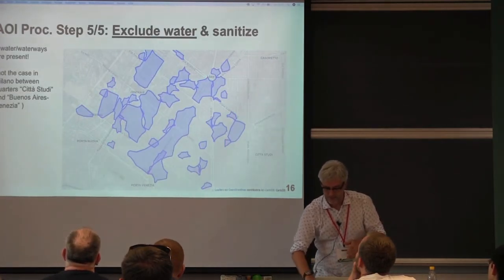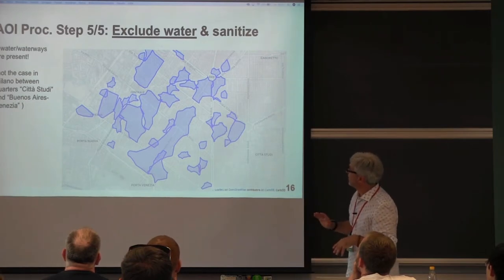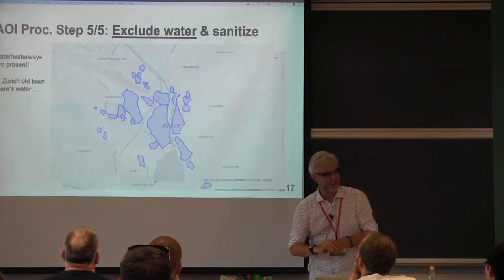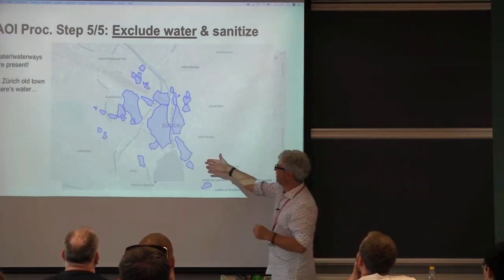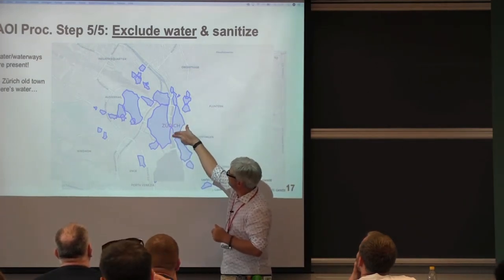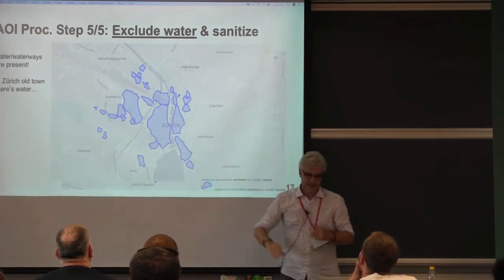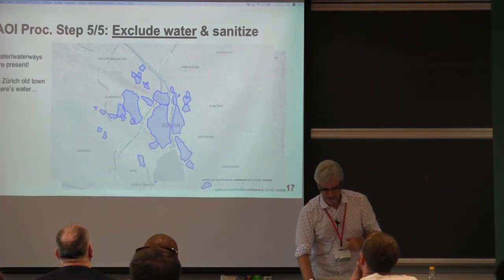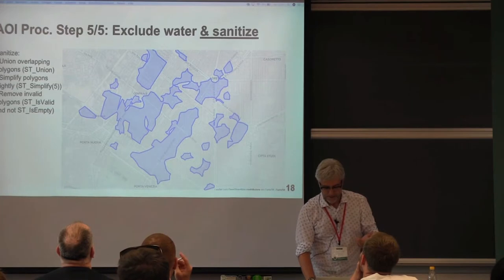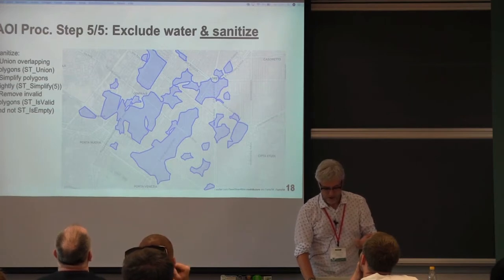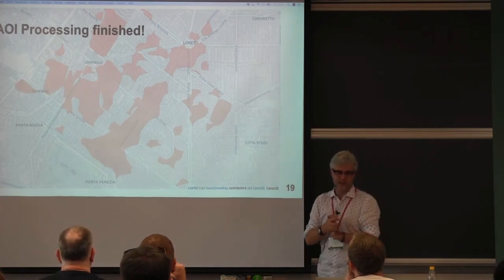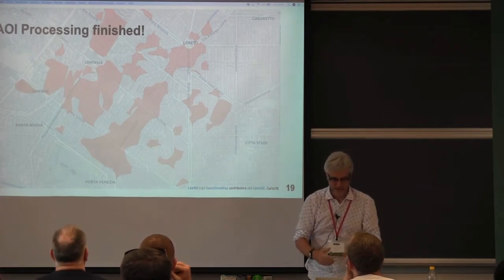Finally, we exclude water areas — there are none in Milan, so I show the example of Zurich where there is a lake and a river. Those water areas are excluded and the whole result is sanitized, which then looks like this for Milan. The result visualized in orange looks like this — that's the result. There's a homepage showing this which I'll quickly show.